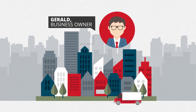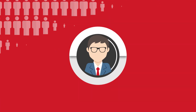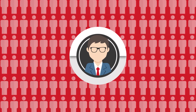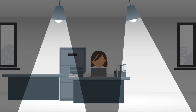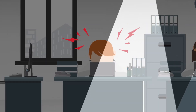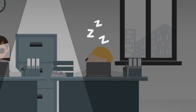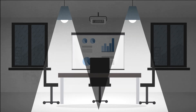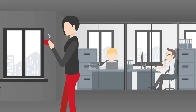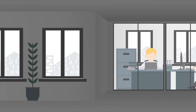Meet Gerald, a business owner who rents a large commercial space downtown. He's a busy guy, managing a team of employees and running a business. Lately, he's been receiving complaints from his workers about poor lighting. Some areas of the office are too bright, have glare, and others are too dim, and it's impacting productivity. A client even referred to the conference room as antiquated and cited a need to relight the entire space. Employee accidents are on the rise, and with his hands full, Gerald needs help.